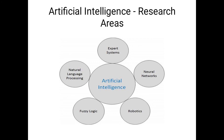The main research areas of artificial intelligence are: expert systems, neural networks, robotics, fuzzy logic, and natural language processing. Examples of expert systems are flight tracking systems and clinical systems. Examples of natural language processing are Google, speech recognition, and automatic voice output. Examples of neural networks are pattern recognition systems such as face recognition, character recognition, and handwriting recognition. Examples of robotics include industrial robots for moving, spraying, and painting.